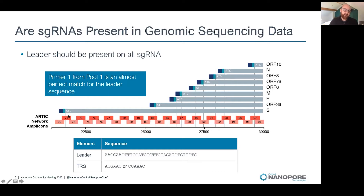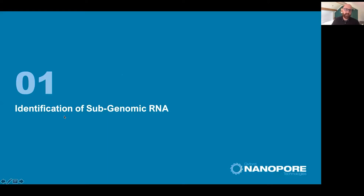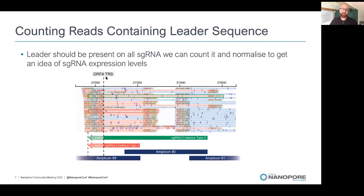The leader sequence should be present on all subgenomic RNA, and it just so happens that primer one in the ARCTIC Network protocol is almost a perfect match for the leader sequence. So primer one forms an amplicon with the other primer in the pool and produces amplicons which are a result of the subgenomic RNA. We can therefore use the presence of the leader sequence to identify subgenomic RNA in our SARS-CoV-2 genomic sequencing data. Looking at raw reads, amplicon 91 shows normal genomic RNA, while at amplicon 89 the reads terminate at the ORF6 TRS site, with soft clipping in the middle of the amplicon that is actually the leader sequence, allowing us to classify reads as subgenomic or genomic RNA.